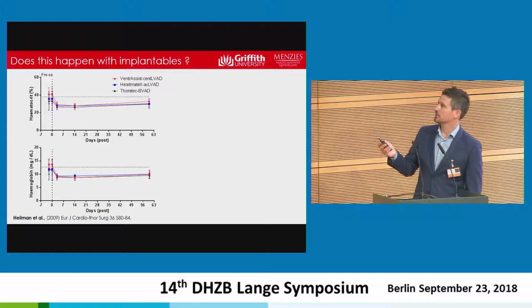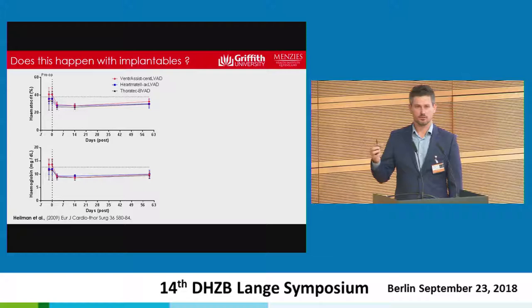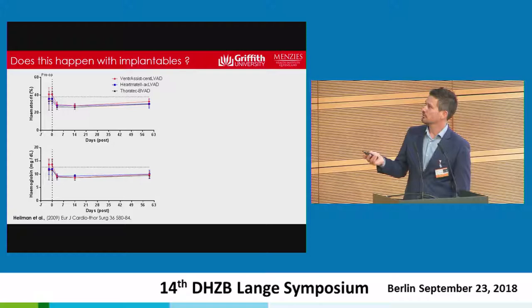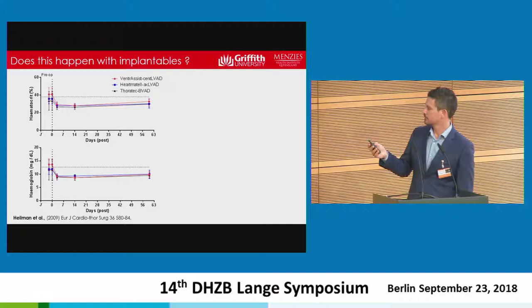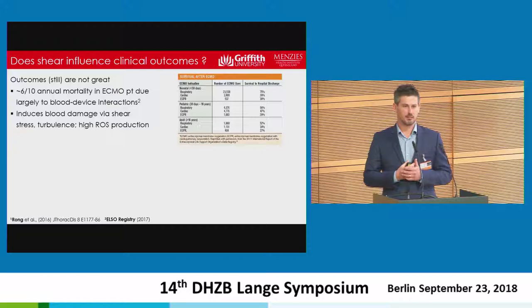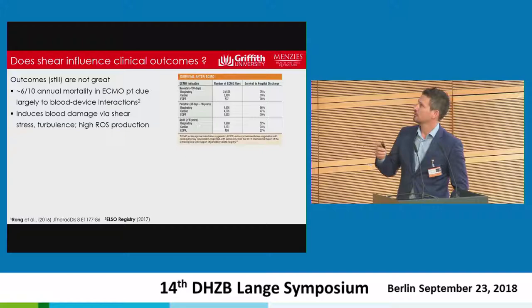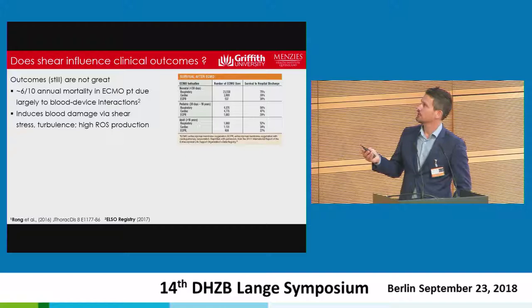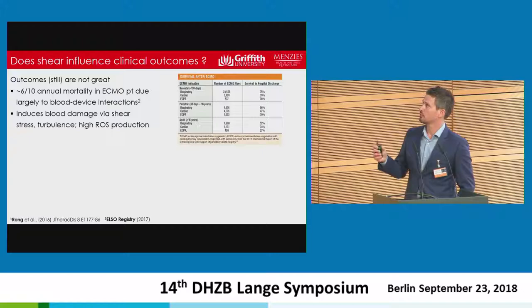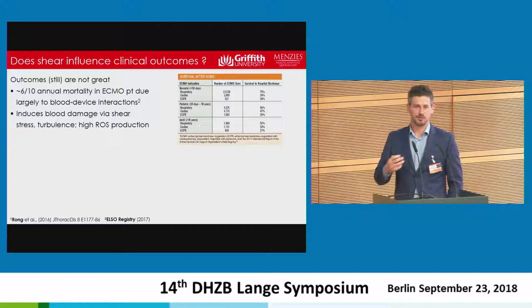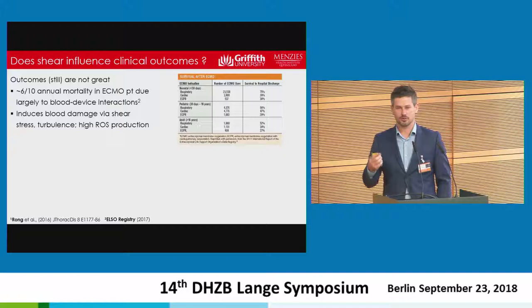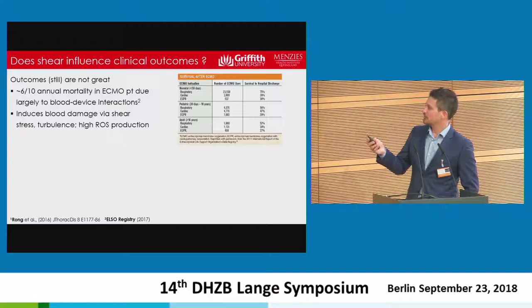Looking at what happens in vivo with implantables, across a variety of different blood pumps, within the first three days of implant both hematocrit and hemoglobin content substantially reduce, and this continues out to about 60 days. Does this have any clinical influence? Yes — ECMO patients are probably the most extreme population receiving mechanical support, and only about four in ten patients on prolonged ECMO actually survive to discharge. Looking more globally at blood pump use, freedom from adverse events is about one in ten patients within 12 months. We have a long way to go with respect to blood pump design.